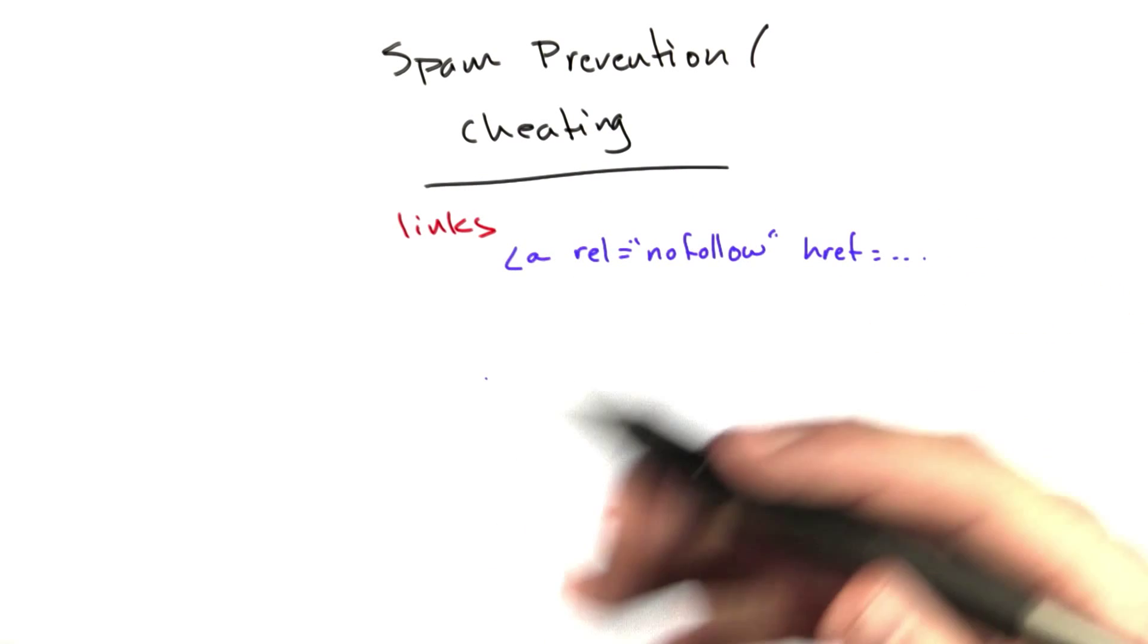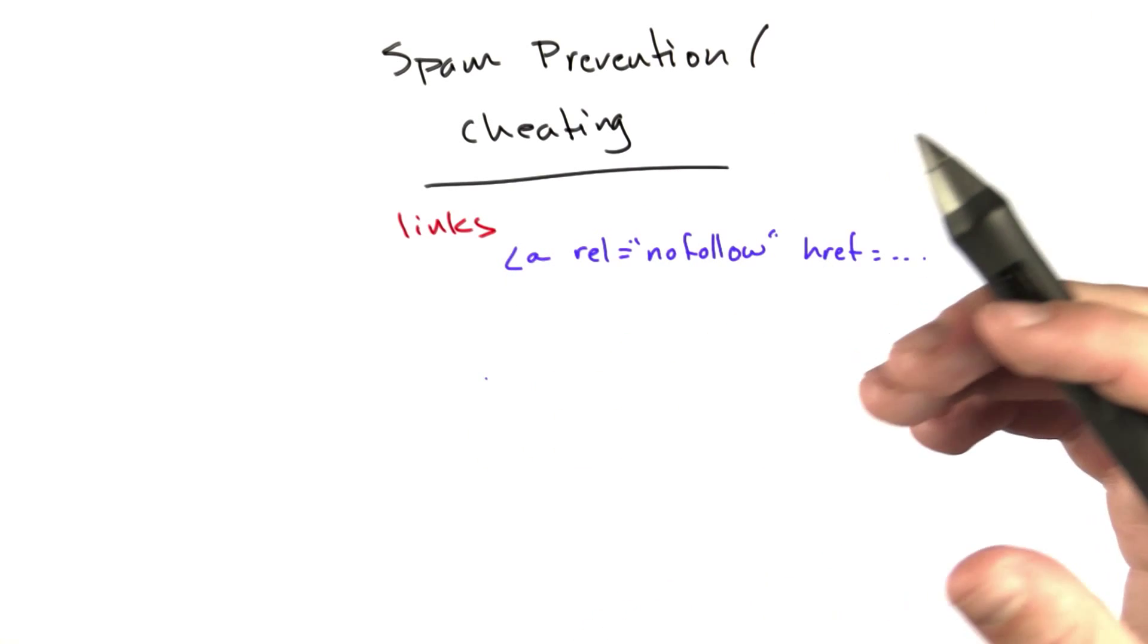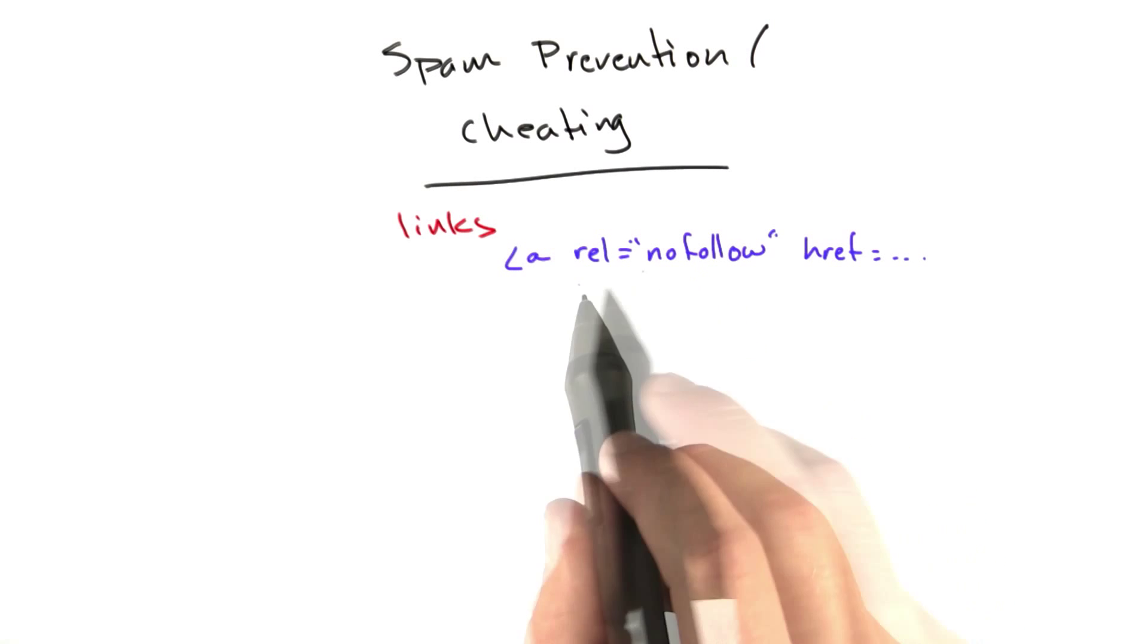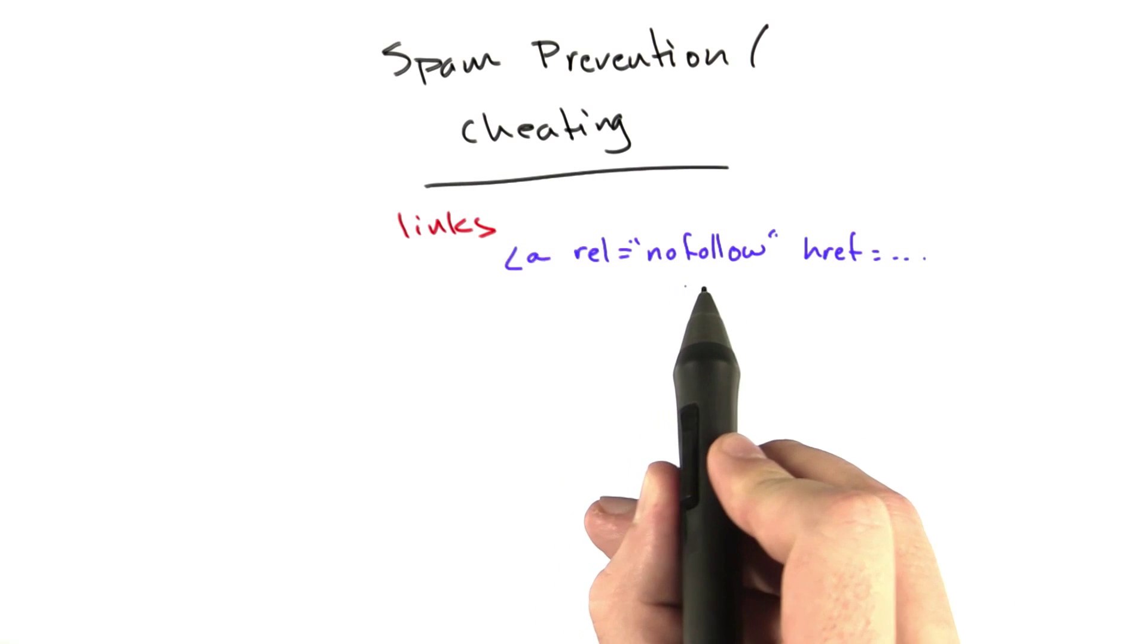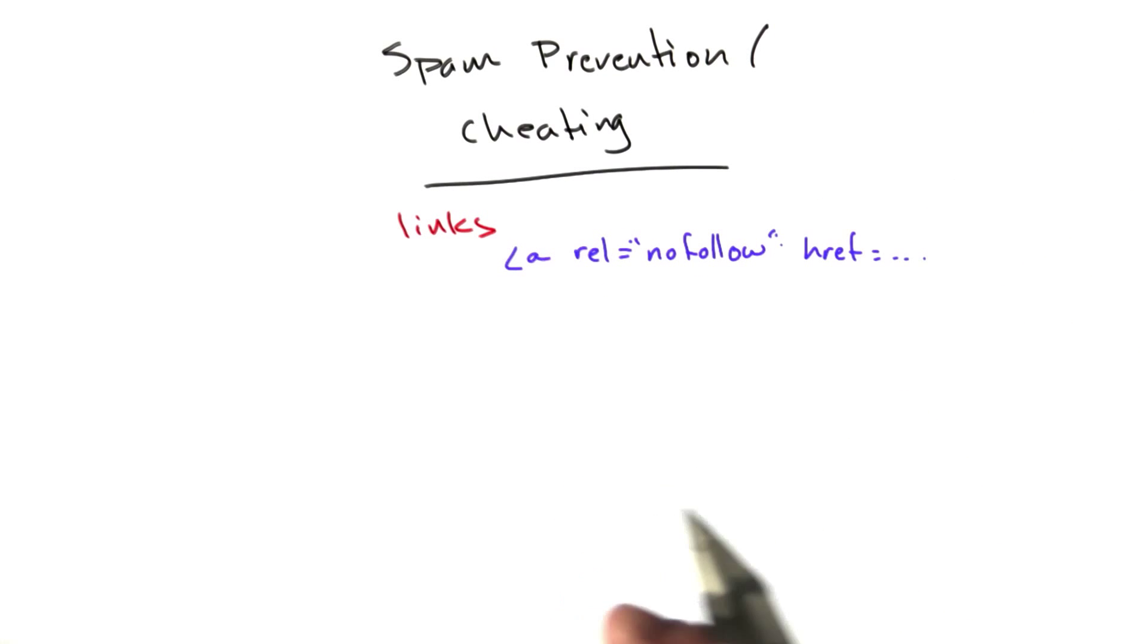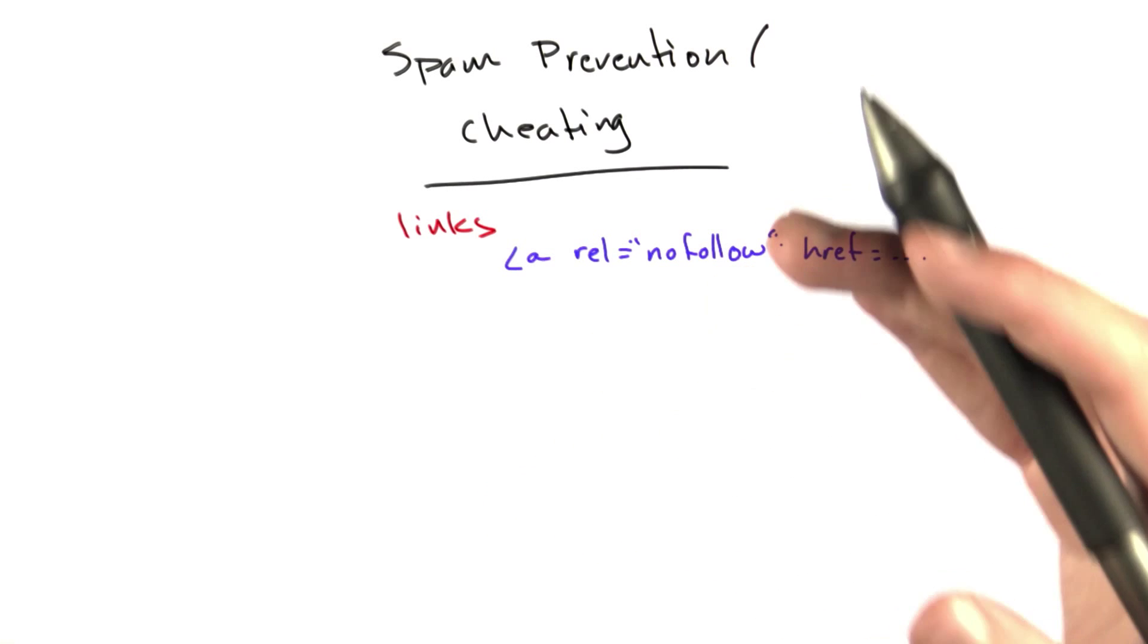Because the way Google works is it looks at a given page, and however many pages elsewhere on the Internet linked to that page gives that page some authority. And you can basically say, I don't want to give this link any authority. So every link on Reddit has rel equals nofollow until it has a certain number of points. Because we didn't want to put rel nofollow on all links because we liked the way the Internet works, and we figured if the link was good on Reddit, that link should have some authority.